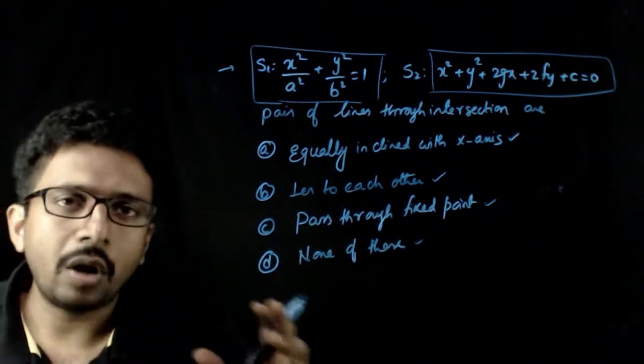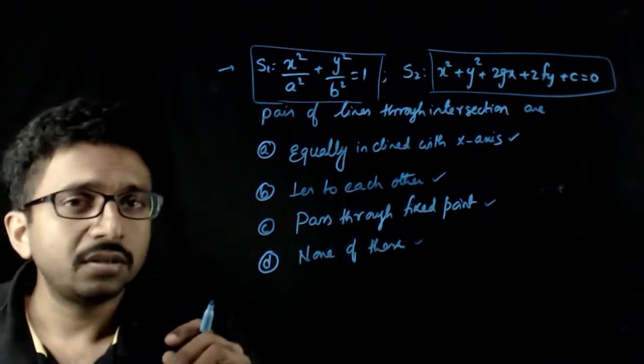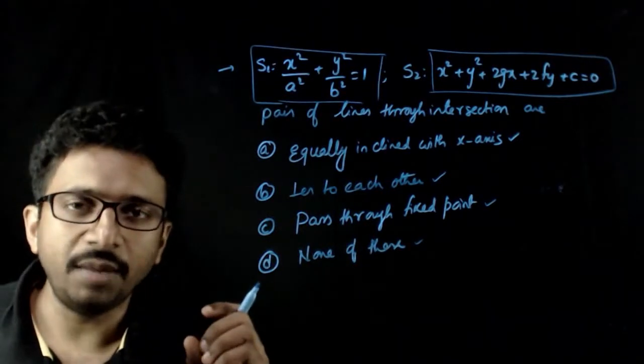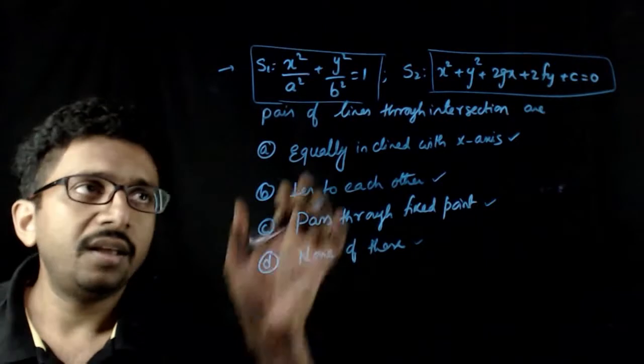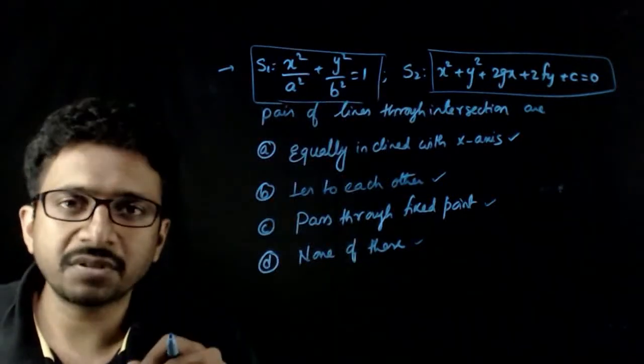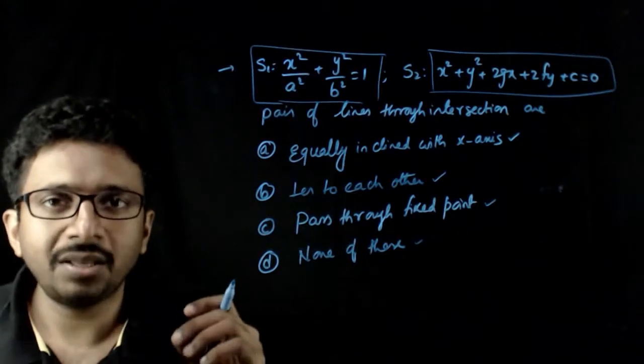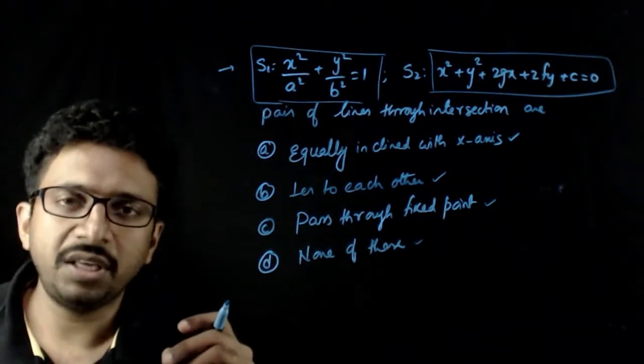I am not going to derive this question. This is a very standard statement in ellipse. There is a standard statement in ellipse which says that if a circle cuts an ellipse at four points, the pair of lines joining those four points are equally inclined with the axis of the ellipse.